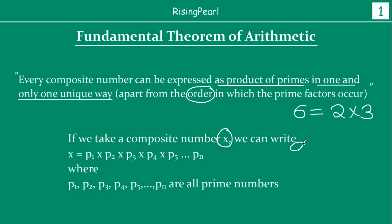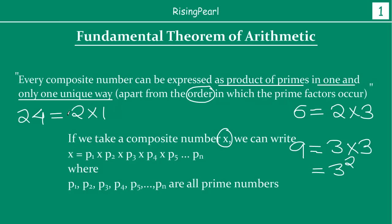Similarly, if you take the number 9, we can write 9 as 3 times 3 — that is, we can express 9 as a product of primes, which we write as 3 to the power 2. And if we have the composite number 24, we can write this as 2 times 12, and then 12 as 4 times 3, and 4 as 2 times 2. So we get 2 to the power 3, multiplied by 3.